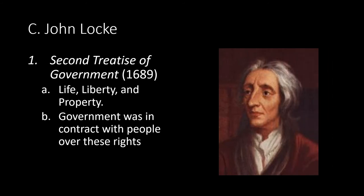John Locke, in his Second Treatise of Government in 1689, argued that individuals would only agree to form a state that would provide a neutral judge acting to protect the lives, liberty, and property of those who lived within it. Life, liberty, and property was changed by Thomas Jefferson in the Declaration of Independence to: 'We hold these truths to be self-evident, that all men are created equal and they are endowed by their Creator with certain unalienable rights, that among these are life, liberty, and the pursuit of happiness.' Locke further argued that government was in contract with the people over these rights. If they failed, the people had the right to overthrow the government. Jefferson would use this argument in the Declaration of Independence: 'That to secure these rights, governments are instituted among men, deriving their just powers from the consent of the governed. That whenever any form of government becomes destructive of these ends, it is the right of the people to alter or to abolish it and institute a new government.'